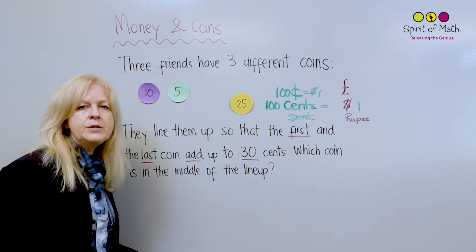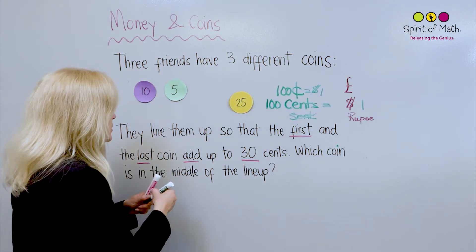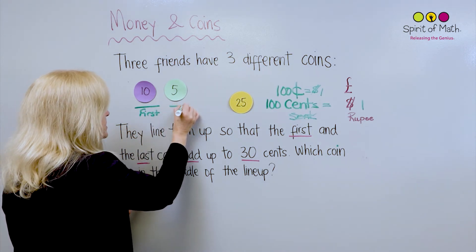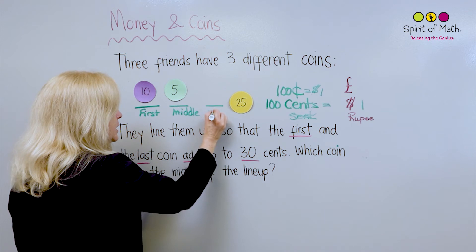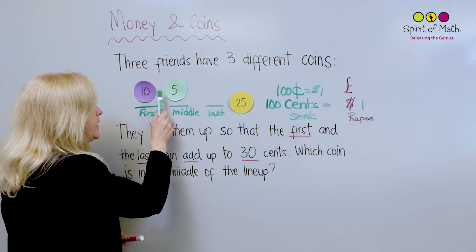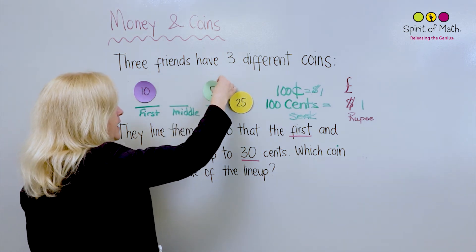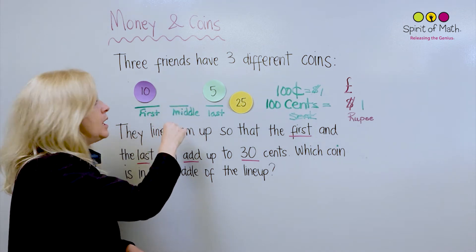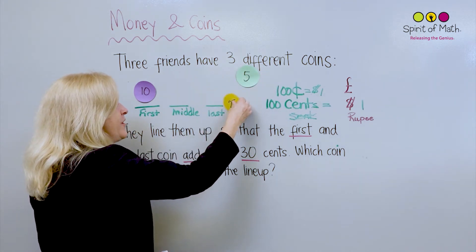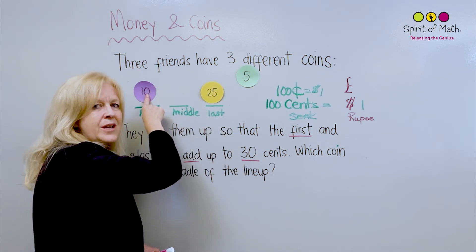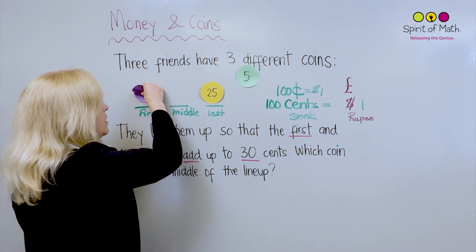What's 10 plus 5? That is equal to 15 — and we want 30 for the first and the last. So this is the first, this is the middle, and then we'd have the last. You could go 10 and 5 and try to add the last one up, but that's not the most efficient way. So 10 plus 5 is 15 — that doesn't make 30. Let's try 10 with the next one: 10 plus 25 — that equals 35. That's too big, so nothing works with the ten cent coin.